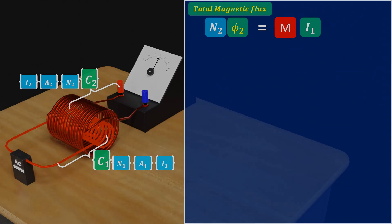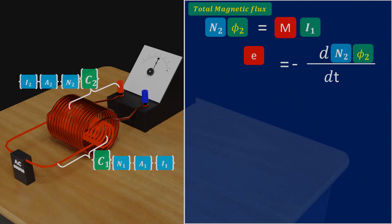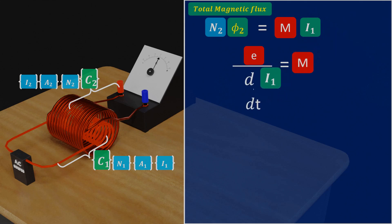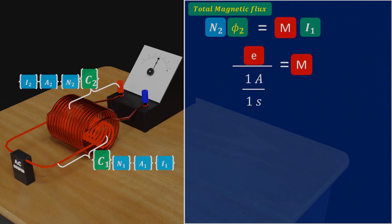We also know from Faraday's law that the induced EMF in the second coil is equal to minus the change in magnetic flux in the second coil divided by the change in time dt. Here we can replace N2·φ2 with M·I1. Numerically, the mutual inductance between two coils will be equal to the induced EMF in the second coil when the current in the first coil changes at a rate of 1 Ampere per second. The unit of mutual inductance is V·s·A⁻¹, which is also called Henry.